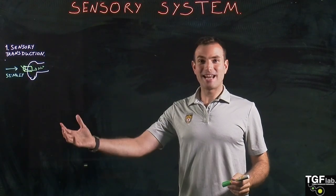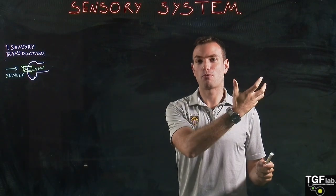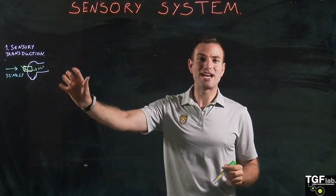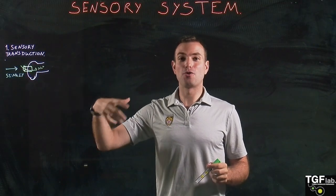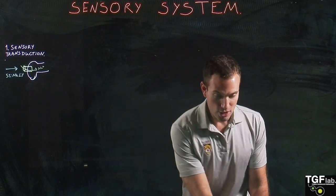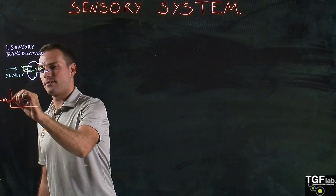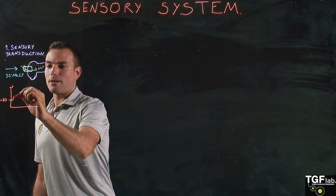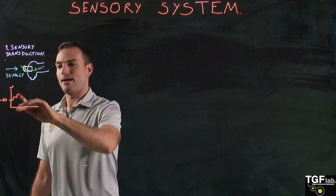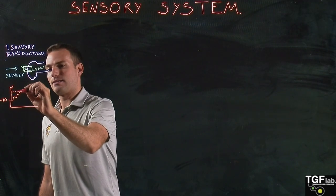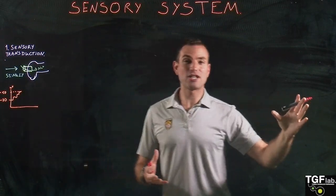In order for the neural stimuli to be transmitted to our brain, we need to first generate a graded potential and then an action potential. The stimuli creates this graded potential — also called the receptor potential or sensory potential — which can go from a resting potential of minus 70 millivolts up to minus 50 millivolts, which is the threshold needed to start the action potential.